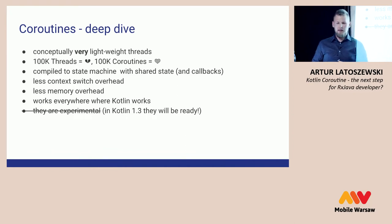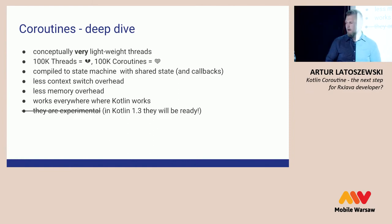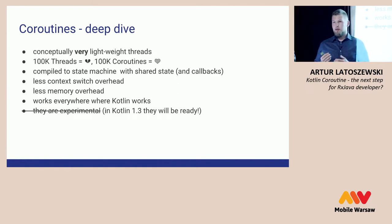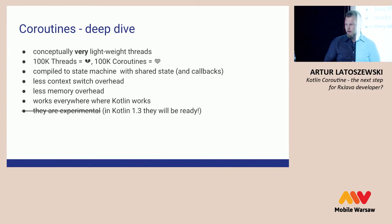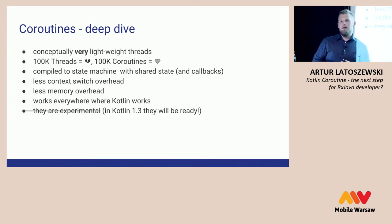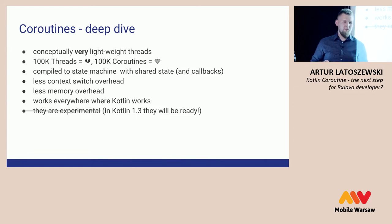Now we have Kotlin 1.3 milestone one. We have to wait, I think about a few months — maybe six months — and we will have non-experimental Kotlin coroutines. There is a tutorial on how to move from experimental to production-ready stable version of coroutines. It's mostly just removing "experimental" from the package and everything will work.